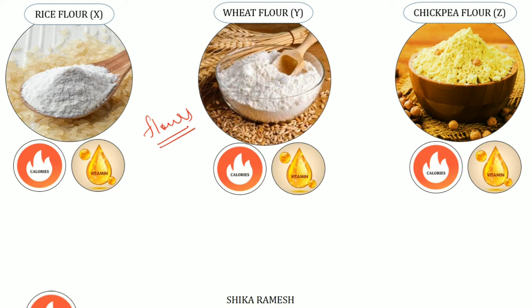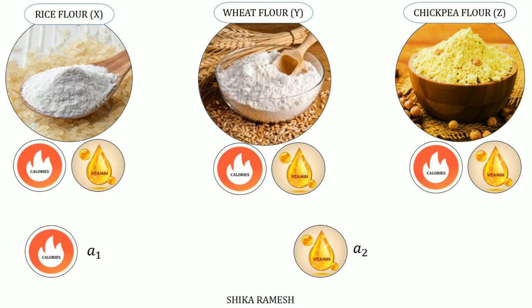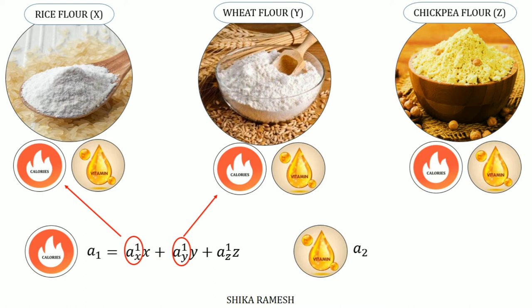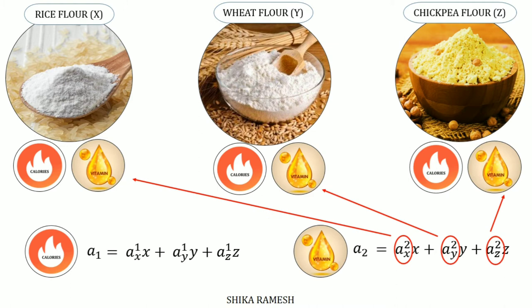We have already denoted A1 as calories and A2 as vitamins. If we express the calories and vitamins to be attained from these three different goods in mathematical format, we can write the equations as: A1 = A1X·X + A1Y·Y + A1Z·Z, where A1X represents the number of calories per unit of good X, and A1Y and A1Z represent the number of calories per unit of goods Y and Z respectively. Similarly, for vitamins: A2 = A2X·X + A2Y·Y + A2Z·Z, where A2X, A2Y, and A2Z represent the number of vitamins per unit of goods X, Y, and Z respectively.